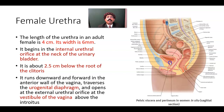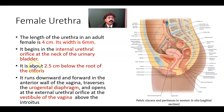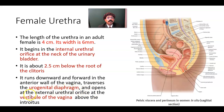It begins at the internal urethral orifice and passes through the anterior wall of the vagina, then traverses the urogenital diaphragm, and opens into the vestibule of the vagina at the external urethral orifice. This opening is about 2.5 cm below the root of the clitoris.